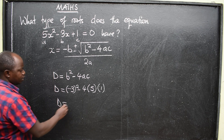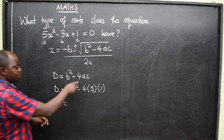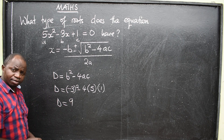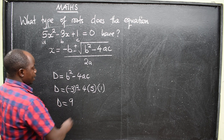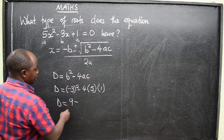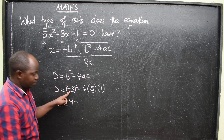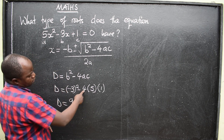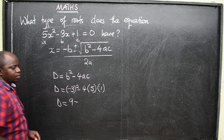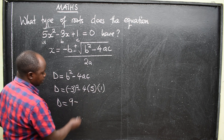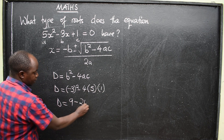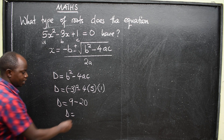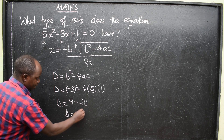So we are going to say d equals negative 3 squared, which gives us 9 — that is negative 3 times negative 3 — minus 4 times 5 times 1, which is 20. This means the discriminant will be negative 11.